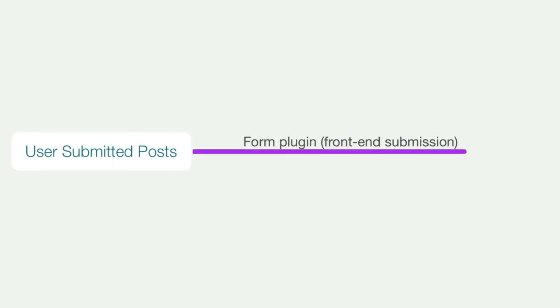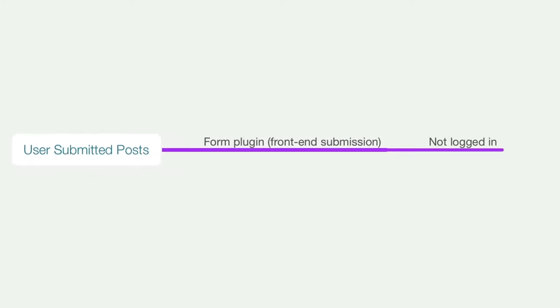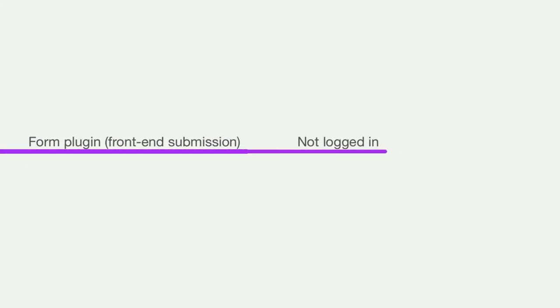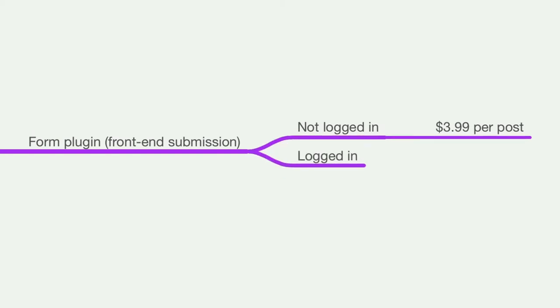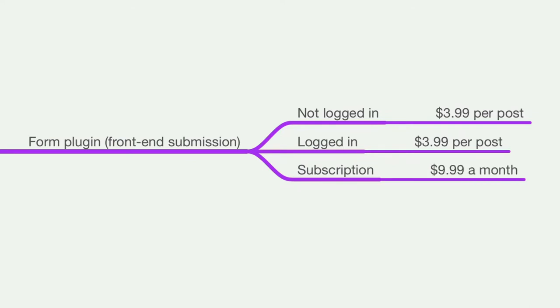This video is going to show you how to do just that with Gravity Forms and Paid Memberships Pro. We have three user states: not logged in (charged $3.99 per post), logged in but not a subscriber (also $3.99 per post), and a subscription tier at $9.99 a month.